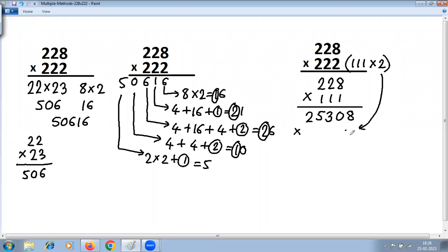8 into 2 is 16, write 6 carry 1. 2 into 0 is 0, plus carry 1 is 1. 2 into 3 is 6. 2 into 5 is 10, so 0 carry 1. 2 into 5 is 10, plus carry 1 is 11. 50616.